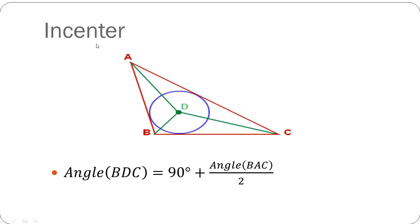This is the in-center of the triangle. The in-center is basically the meeting point of all the angle bisectors. AD is the angle bisector of angle A, BD is the angle bisector of angle B, and CD is the angle bisector of angle C, with their meeting point at D. The formula here is: angle BDC equals 90 degrees plus half of angle BAC.